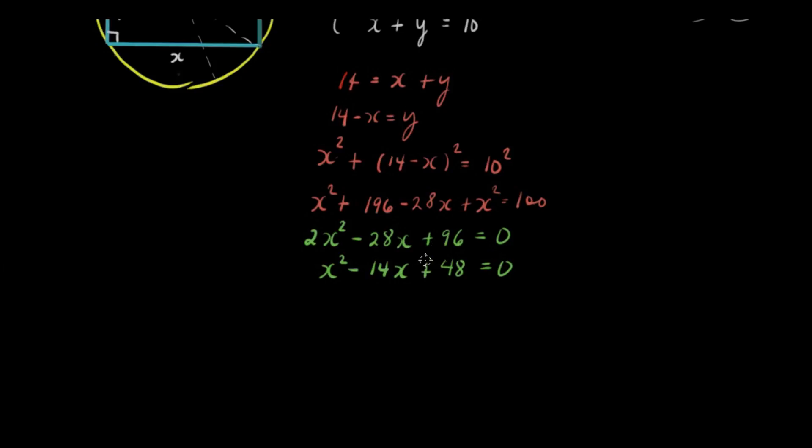This is factorable. The factors of 48 that add to 14 are negative 8 and negative 6. We have x minus 8 and x minus 6 which is equal to 0.